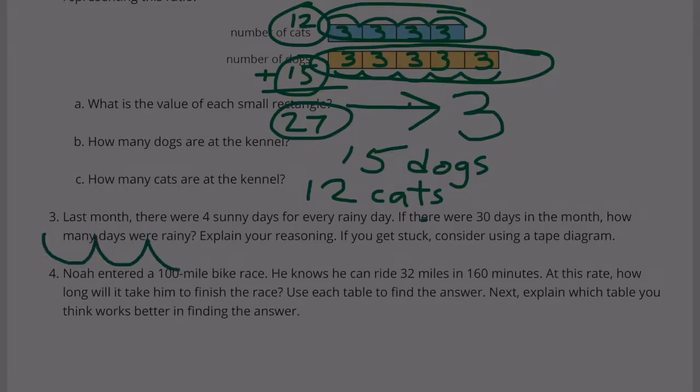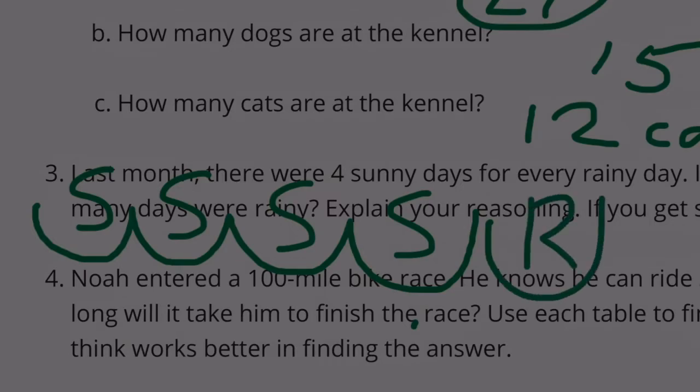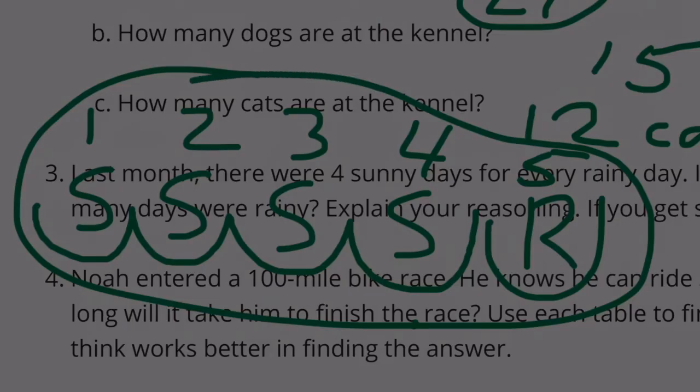1, 2, 3, 4 - these are all sunny. And then finally, you have a day that's rainy. This is a total of 1, 2, 3, 4, and 5. So in these 5 days, 1 of them is rainy, 4 of them are sunny.